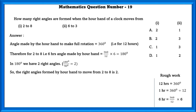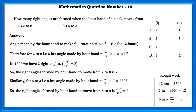The right angles formed by the hour hand moving from 2 to 8 is 2. Similarly, from 6 to 3 is 9 hours, so the angle made by the hour hand is 360 ÷ 12 × 9 = 270 degrees. So the right angles formed by the hour hand moving from 6 to 3 is 3 right angles.